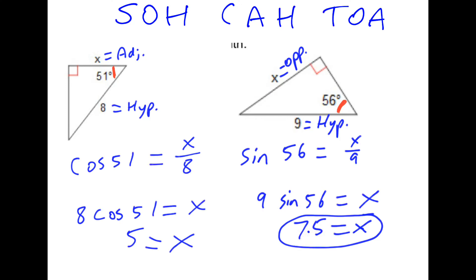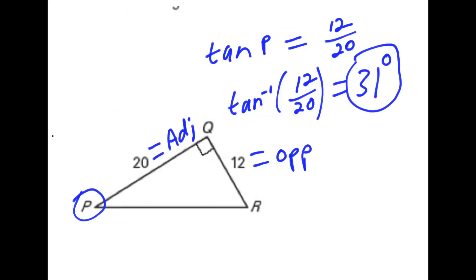In both of these cases, when I'm finding a side length, I'm going to use cosine and sine or tangent. Not the inverse functions, but the base functions. Compare that with an example like this one, where I'm trying to find angle P. Here I'm given two side lengths, the opposite and adjacent side lengths relative to P, so I know I'm going to use tangent. But I'm going to take the inverse tangent of 12 over 20 because I'm trying to find an angle. That's when you use inverse tangent to find angles.